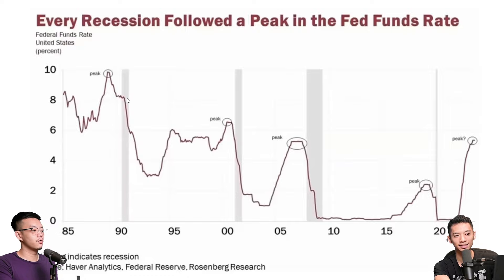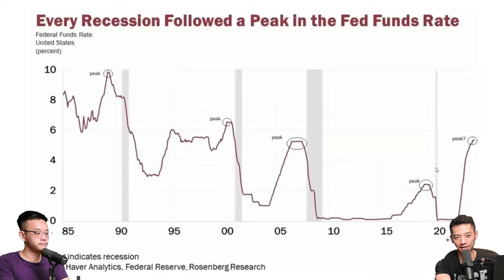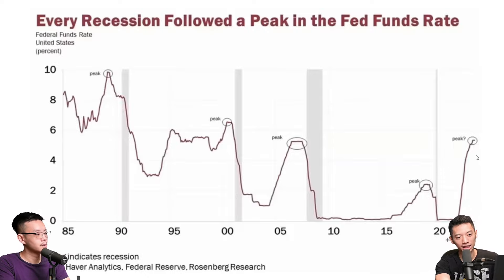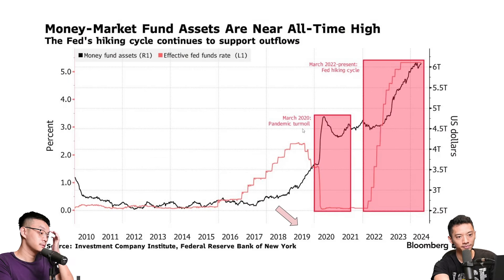The 1991 recession was linked to the Gulf War. Then 2008 was the global financial crisis, and the most recent was COVID. So right now, we don't know what the catalyst for 2024 would be — this one is still a question mark. But potentially, there may be a recession if we look at this data historically.